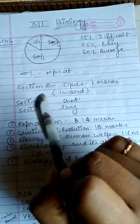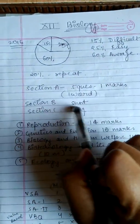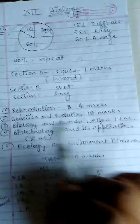Section A has 5 questions of 1 mark or 1 word. Section B has short questions. Section C has long questions.